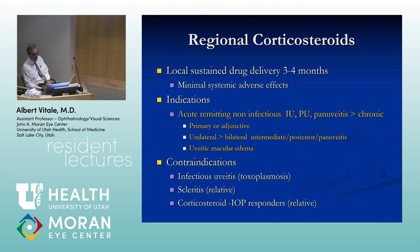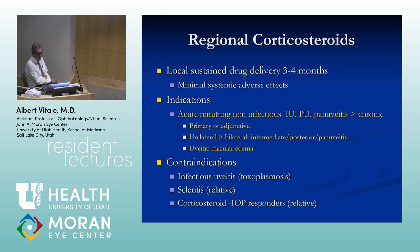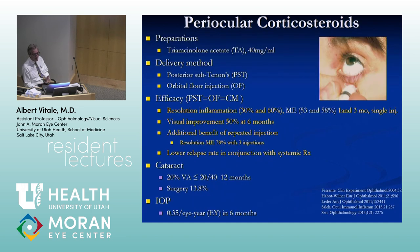Regional steroids provide local sustained delivery for about three to four months and minimize systemic adverse events. They're very useful particularly in acute non-remitting disease that is unilateral, particularly intermediate uveitis. Contraindications include infectious disease — you'd never want to administer periocular steroids in a patient with toxoplasmosis or suspected scleritis — or in a patient who is a large steroid responder. The preparation most often used is triamcinolone acetonide at 40 mg/mL, delivered either by posterior subtenon or orbital floor injection, with equal efficacy.